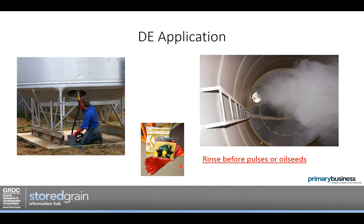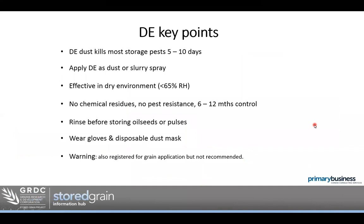Do consider personal protective equipment — a dust mask, gloves, and goggles, since this stuff is abrasive and nasty in the eyes. It's a safe, non-chemical product, but if storing pulses or oilseeds there's a risk of diatomaceous earth settling in the cone of the silo and causing discolouration. My suggestion is to do the hygiene and structural treatment, then just before harvest, if storing pulses or oilseeds, give the silo a quick rinse out to make sure no quantities have compiled that might get into your sample.